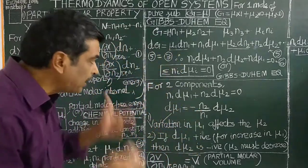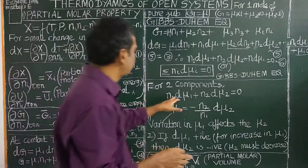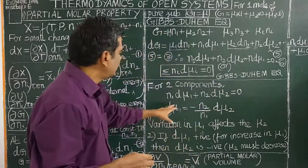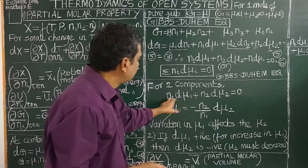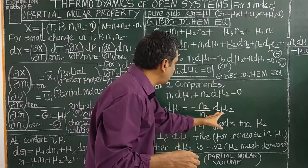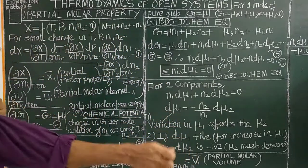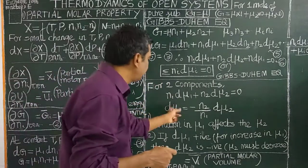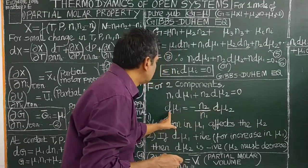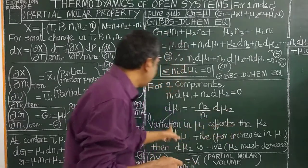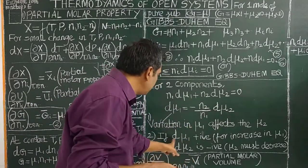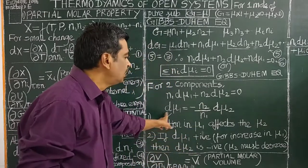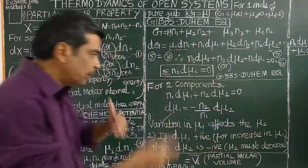Let us apply this for two components: N1 dμ1 + N2 dμ2 = 0. Therefore dμ1 = −(N2/N1) dμ2. Looking at this equation, if dμ2 is positive, then dμ1 must be negative — meaning if we increase the chemical potential of component 2, the chemical potential of component 1 must decrease.